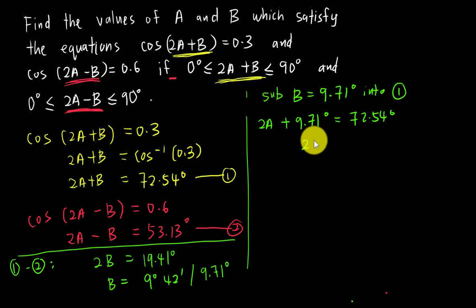I can solve it to get A. I'll say 72.54 minus 9.71 gives me 62.83, then divide by 2. I get A = 31° 25' in degrees and minutes, or I prefer leaving it in degrees, which is 31.42°.